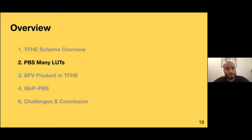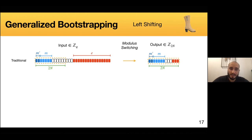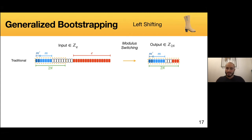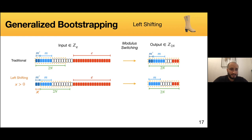We're going to look at a new method called PBS ManyLoots, which allows us to evaluate many functions in one single PBS. We first introduce a new tool called generalized bootstrapping, which acts on the modular switching step. In the usual bootstrapping, the first step shifts from a ciphertext encoded over Q bits to one encoded over 2N bits, retaining the most significant bits. The idea is to add more degrees of freedom by choosing the position of the most significant bit retained after modular switching. We define a new variable Kappa; if Kappa equals 2, after modular switching we have shifted by two bits from the most significant bits.